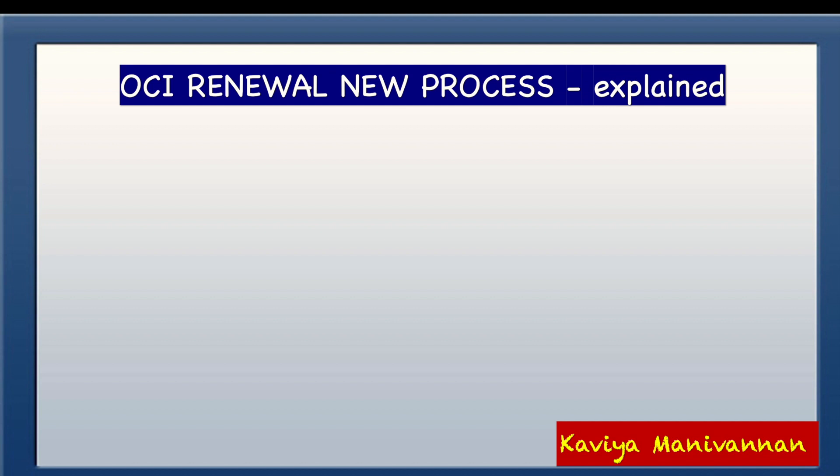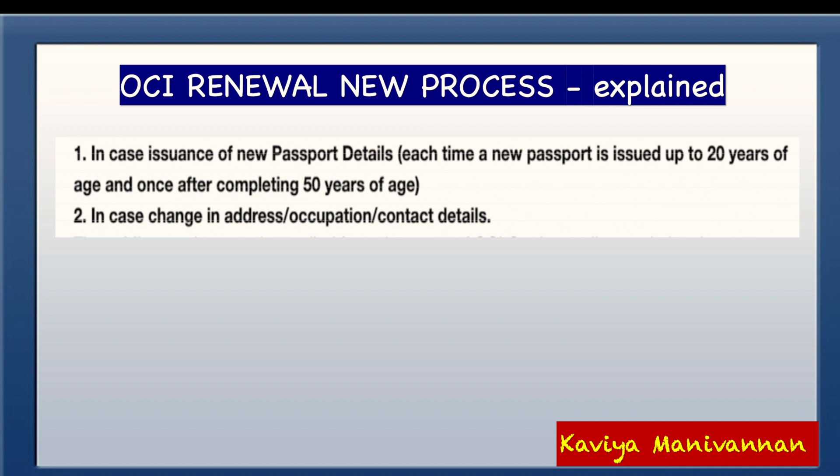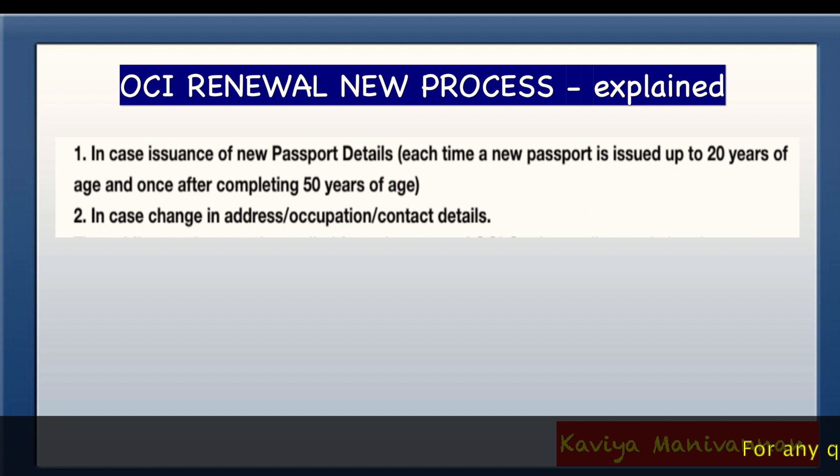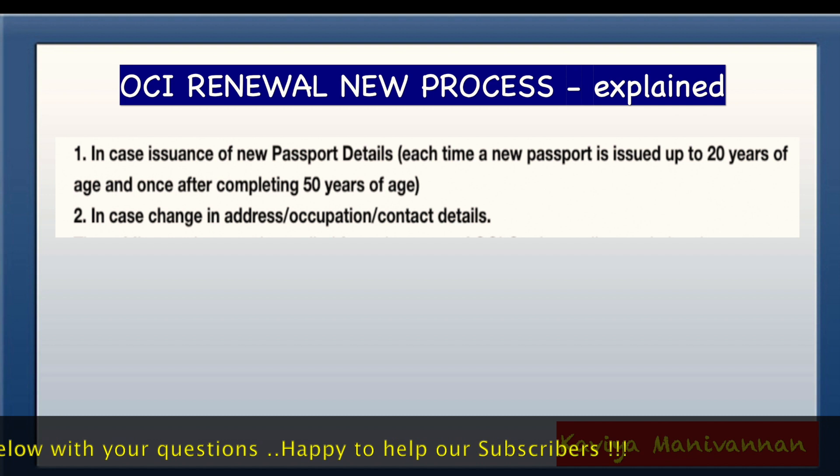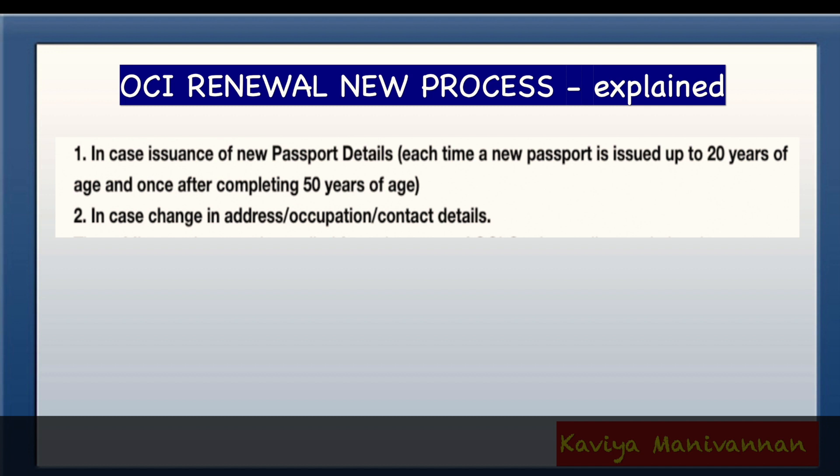This is Step 1. Now let's see the OCI renewal new process. The first case is issuance of a new passport — each time a new passport is issued up to 20 years of age, and once after completing 50 years of age. Or in case of change in address, occupation, or contact details, we need to renew OCI.